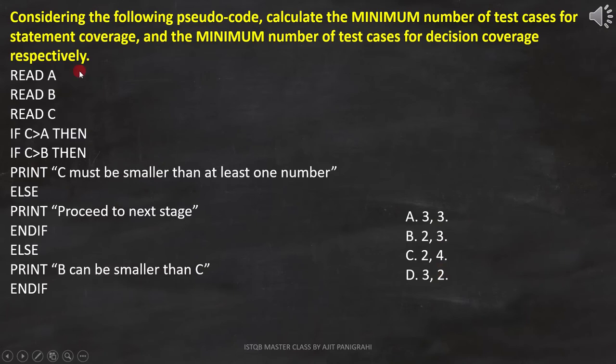Now let's analyze the code to get the correct answer. Line 1, 2, and 3 are read A, read B, and read C. They are all statements, so we can represent it like this.